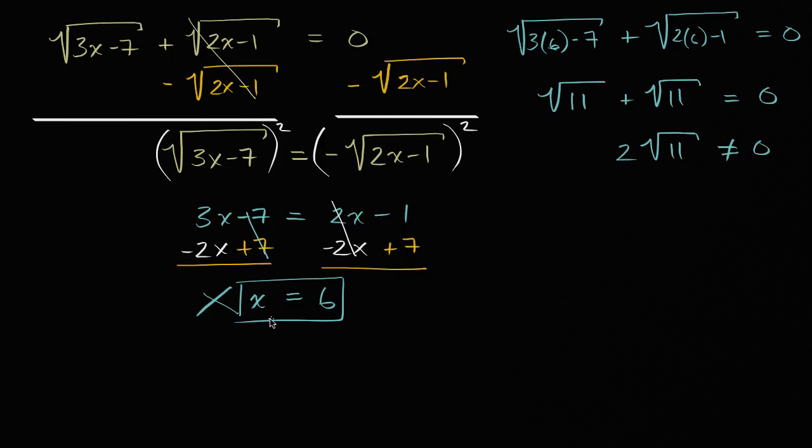Because it's actually the solution to the equation, it's a solution to the equation: the square root of three x minus seven minus the square root of two x minus one is equal to zero.